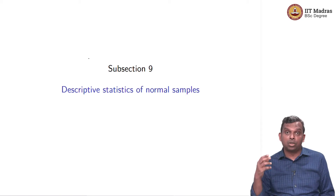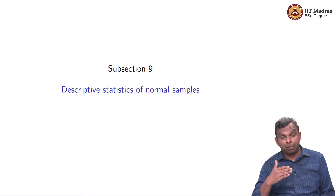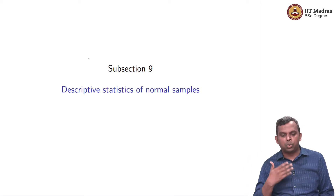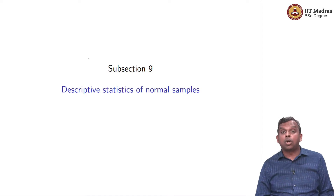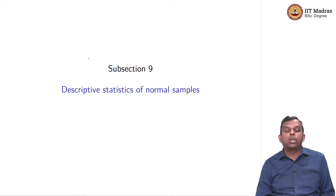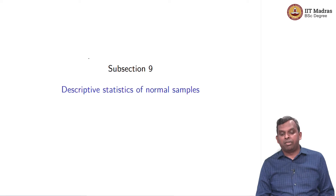When we have IID samples, we consider the sample mean and the sample variance and do some calculations with that. It turns out that when the distribution is normal, you can say a lot more about what the sample mean and sample variance will be.